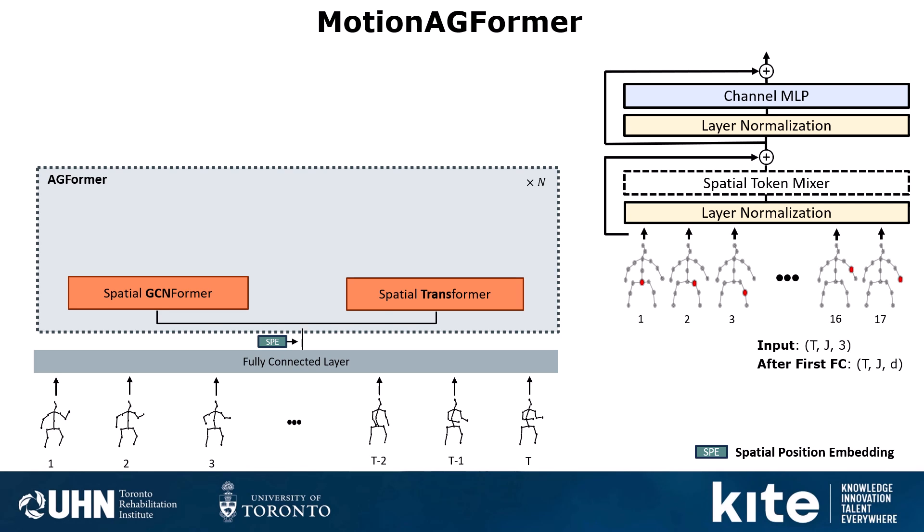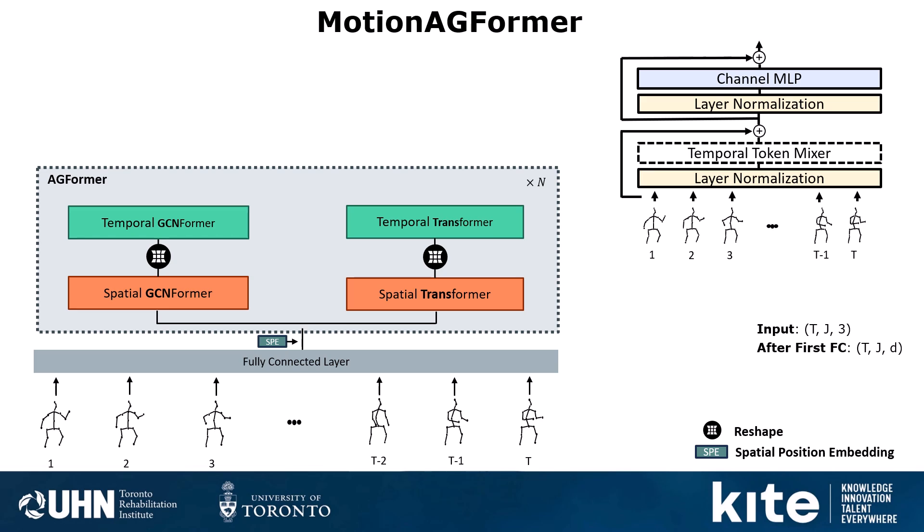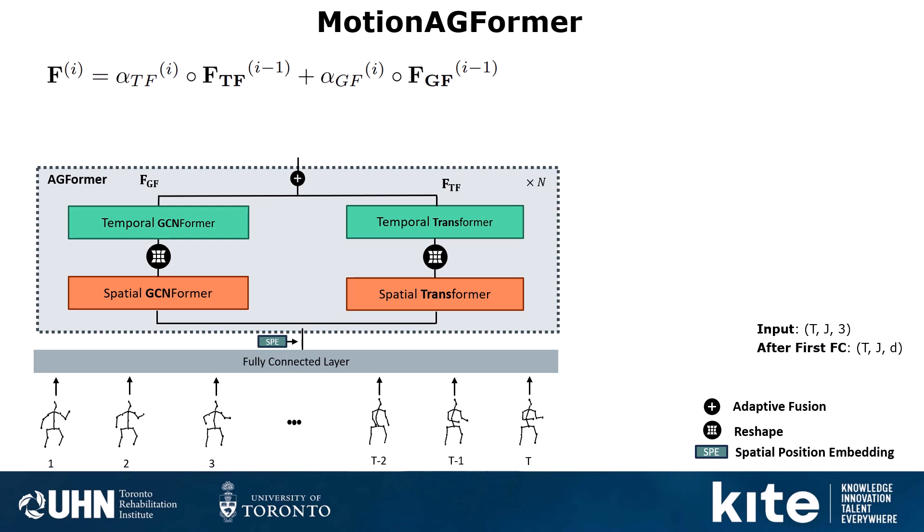Following the Spatial Modules, we reshape the tokens so that each token represents a single frame, and then we apply Temporal MetaFormer Modules, which are responsible for extracting inter-frame relationships in the sequence. Finally, we need to merge them. For the merging strategy, we use Adaptive Fusion — the same as what the MotionBERT paper from ICCV 2023 uses. It is a weighted average between the two representations, where the weights are unique per each sequence, computed by concatenating the two representations, multiplying by a learned W module, and applying softmax to produce values between 0 and 1.